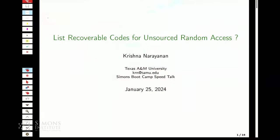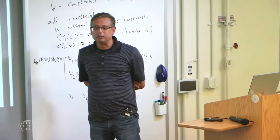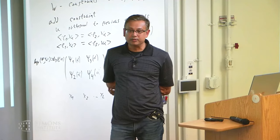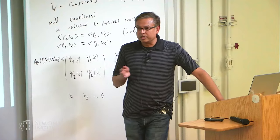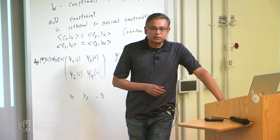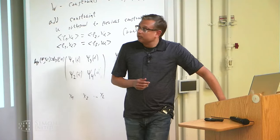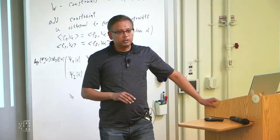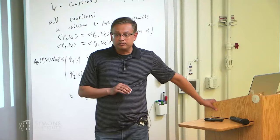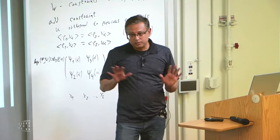Next up we have Krishna Narayanan from Texas A&M. I am interested in understanding how list-recoverable codes may be of use for some multiple access problems in wireless networks. I'm going to spend most of this time trying to describe the context and the problem and maybe pose a few questions. The problem we've been interested in: you have a wireless network with a large number of users, but only a small set of them are active at any given time. Say we have K users who are active, and each one has a B-bit message they want to send.